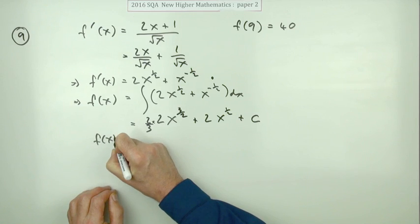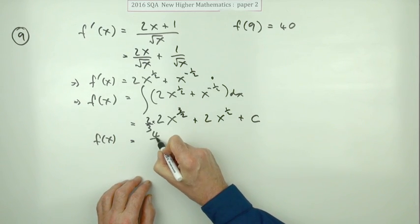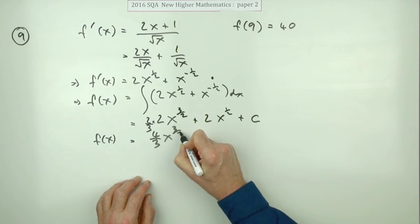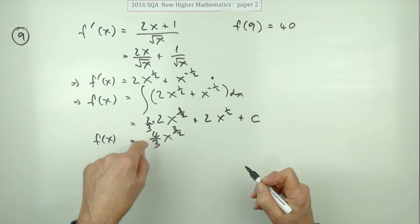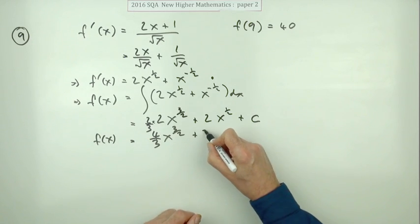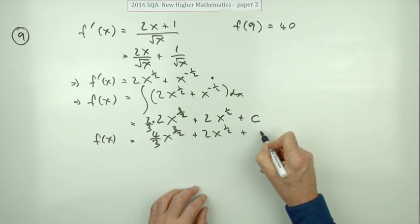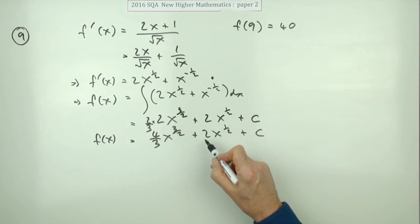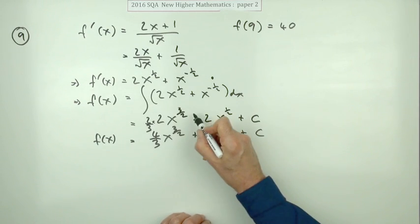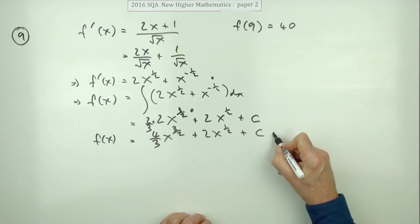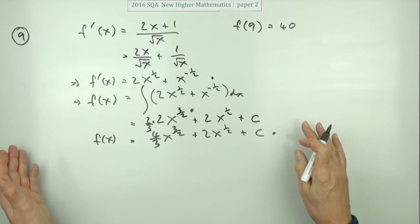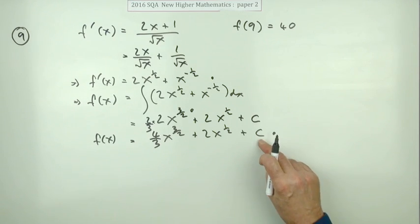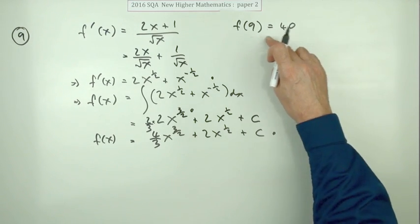And don't forget add on C. I'll just write that again neatly because that's going to come to four upon three x to the three upon two, plus two x to the power of half plus C. Now there's two marks in the integration - one was for starting off by doing one of them and the other one was for finishing it off. Now that's three marks so far, so last mark's just for evaluating this constant and you put this in.